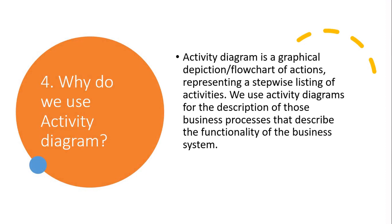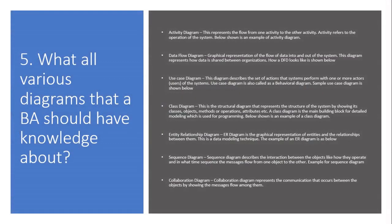Question 4: What is an activity diagram? An activity diagram is a graphical depiction — a flowchart of actions — representing a stepwise listing of activities. We use activity diagrams for the description of those business processes that describe the functionality of the business system.